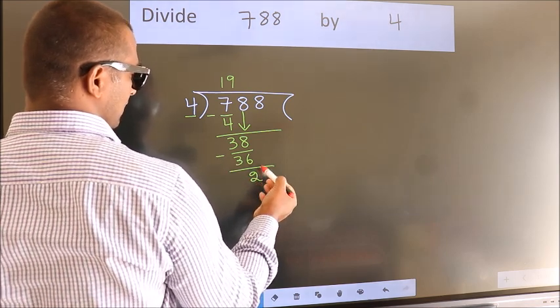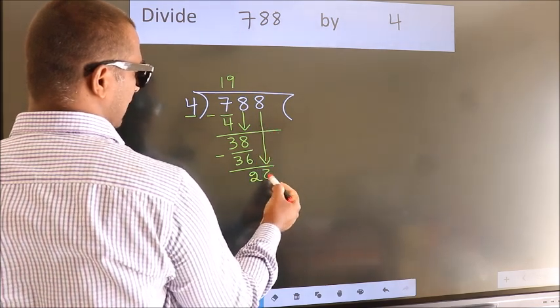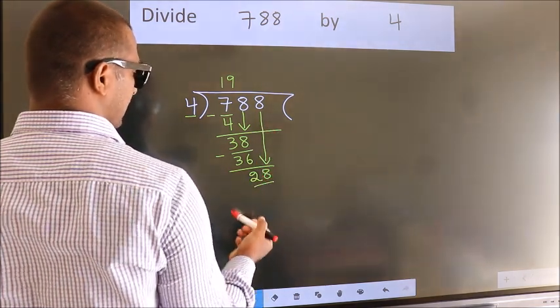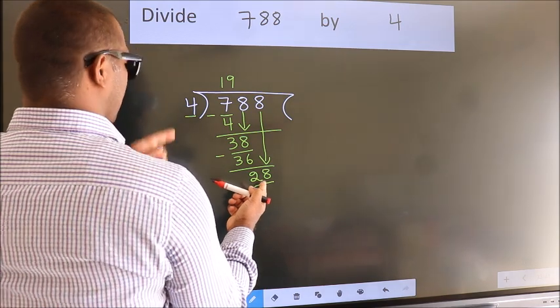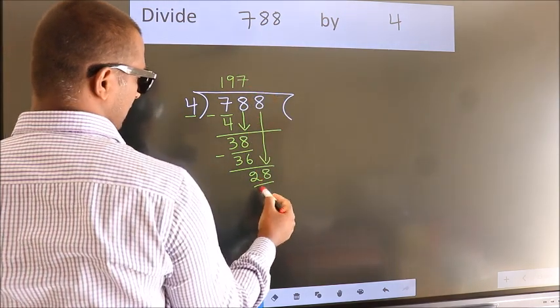After this, bring down the beside number. So, 8 down. So, 28. When do we get 28? In 4 table, 4 7s, 28.